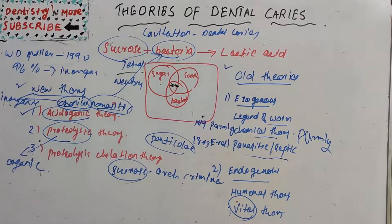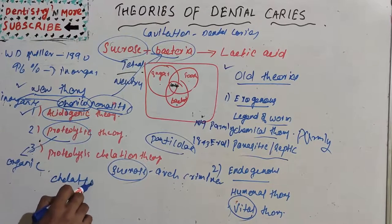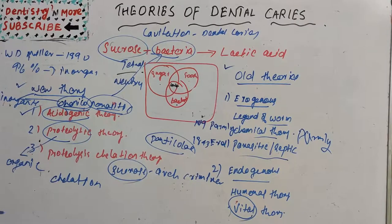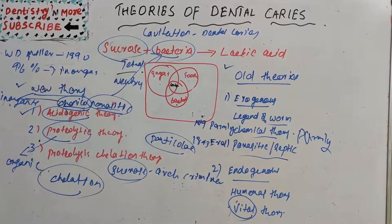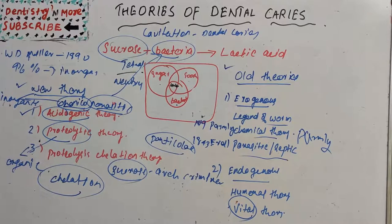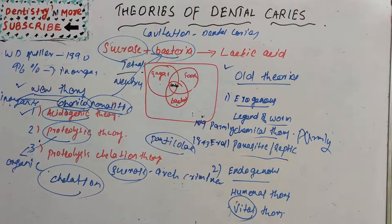The last theory is the proteolytic chelation theory. Chelation is the removal of calcium by forming soluble chelates. Oral bacteria attack the organic component of enamel through proteolysis, and then the breakdown products have chelating ability, which dissolves the tooth mineral. So the proteolytic chelation theory involves bacteria attacking the protein component, which then causes chelation by dissolving the tooth mineral, resulting in dental caries.